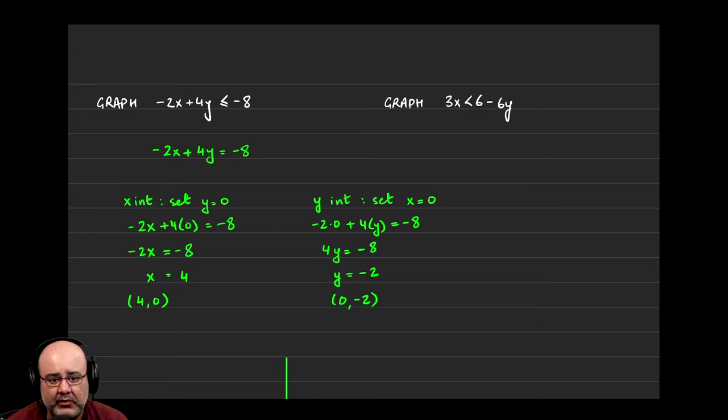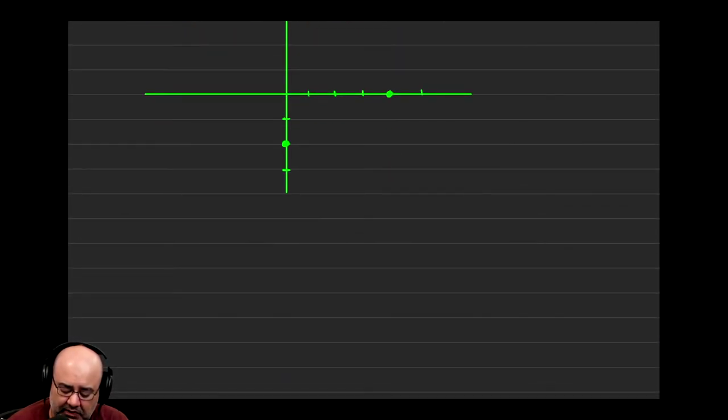For that, we go back to the original inequality. Because it has a little equal sign in it, we have to draw a solid line. If it were just less than, then it would be a dash or dotted line. But because it's less than or equal to, we have to connect these two dots with a solid line.